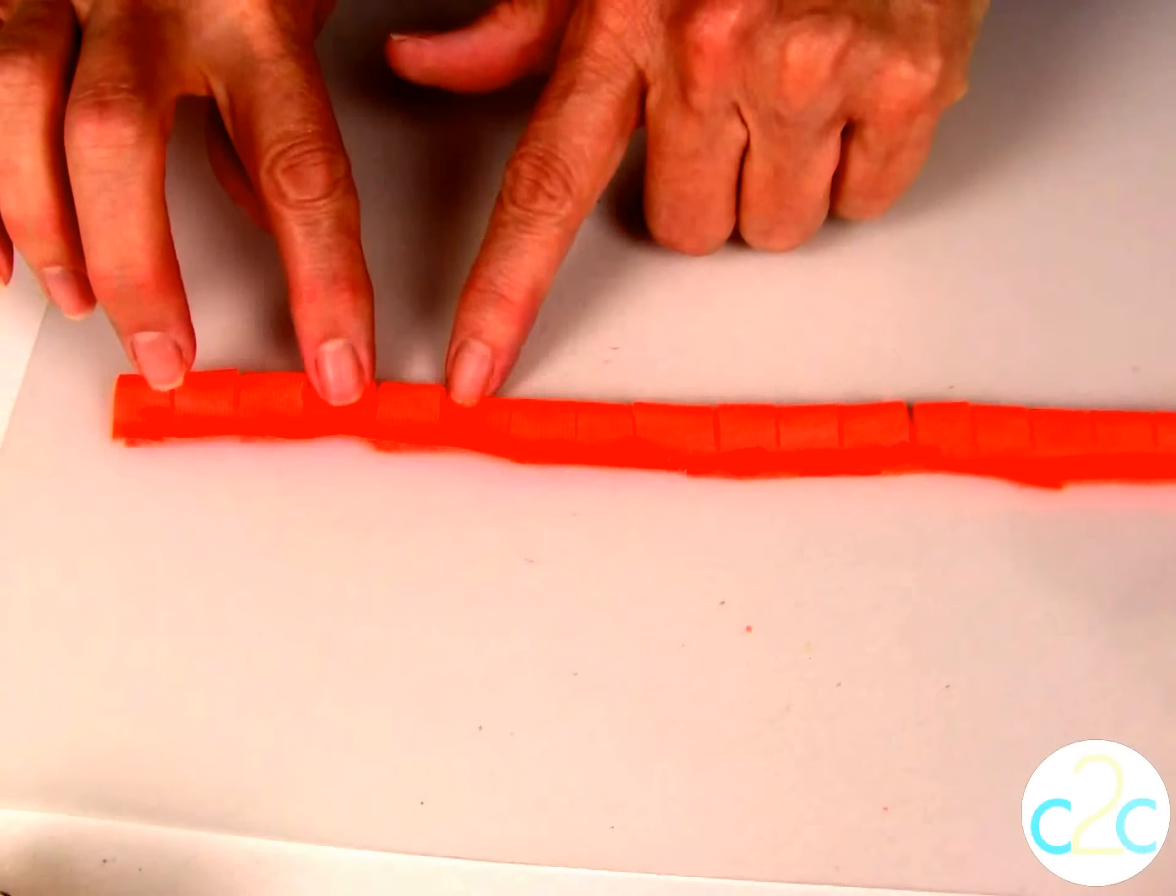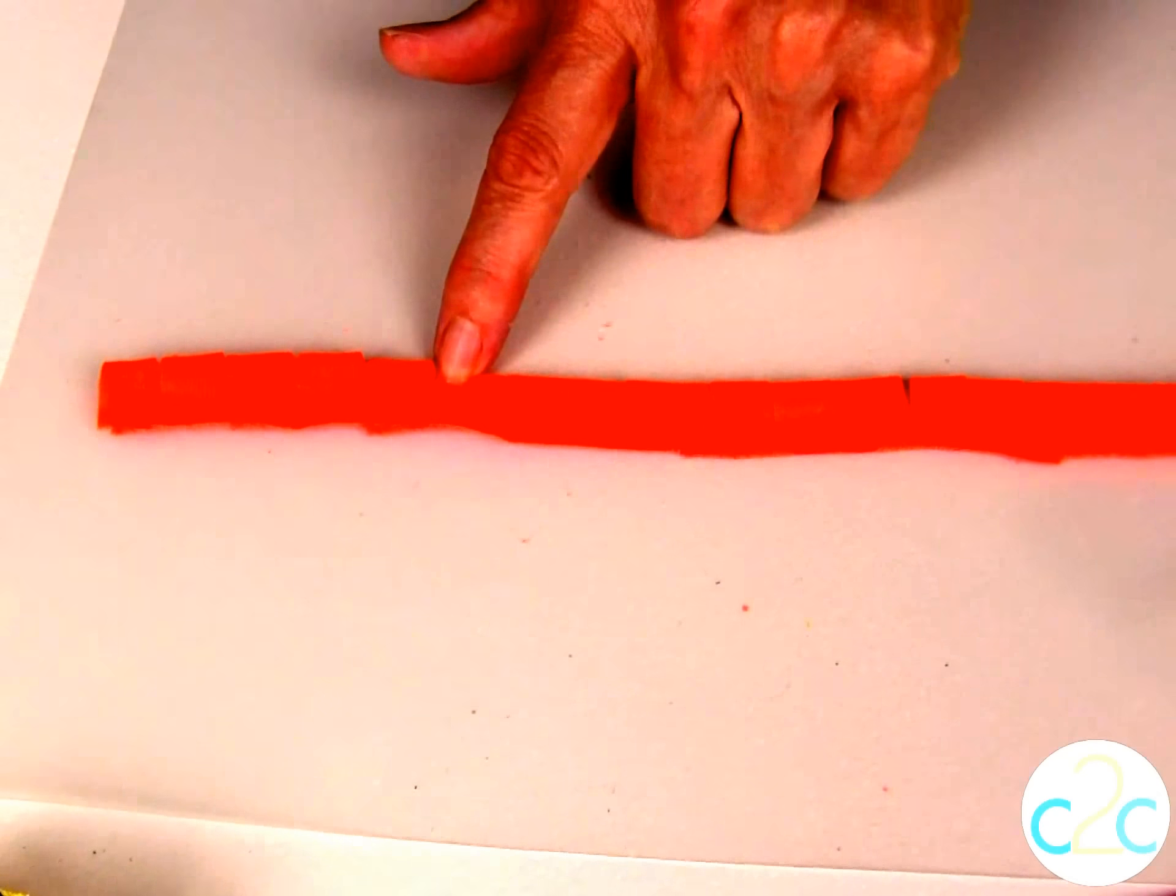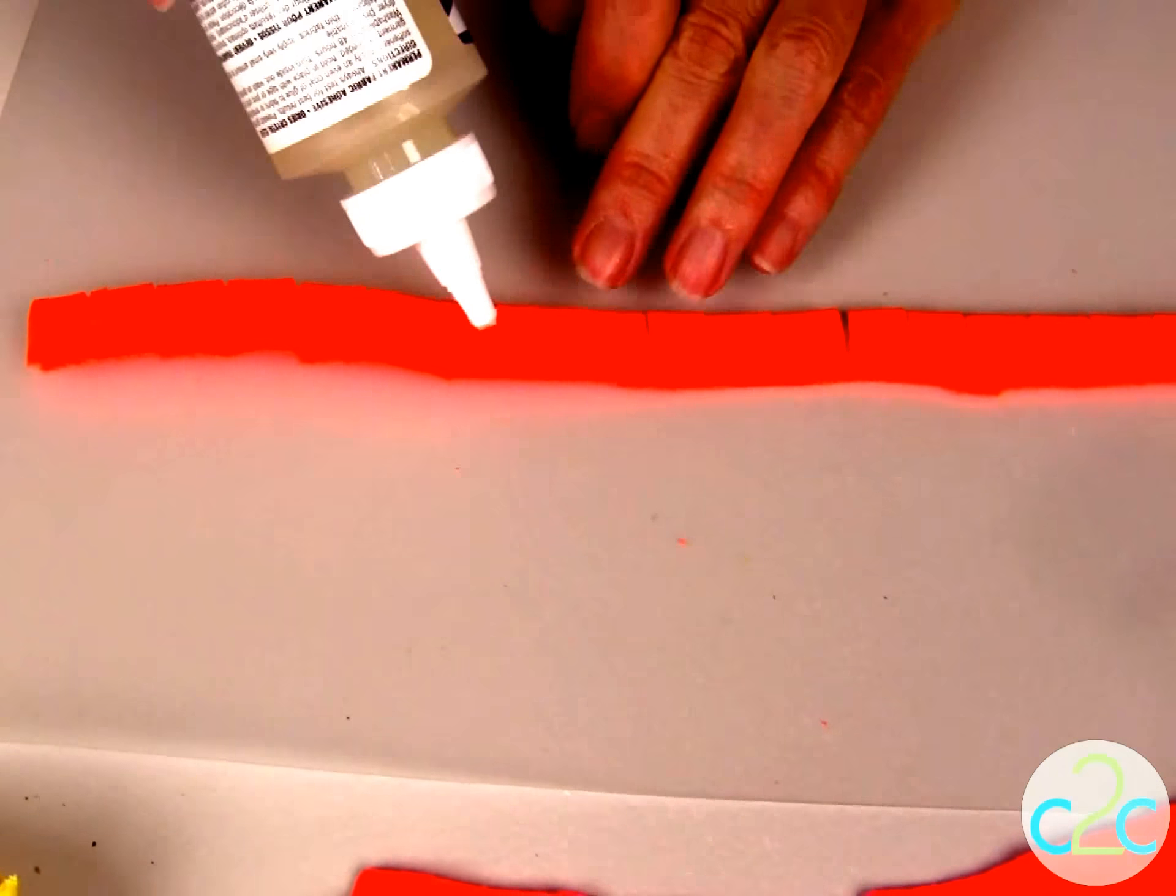I finished cutting all of the slits into my fabric. I've applied my Aleene's Fabric Fusion Glue right along the edge. Now we're ready to start rolling.